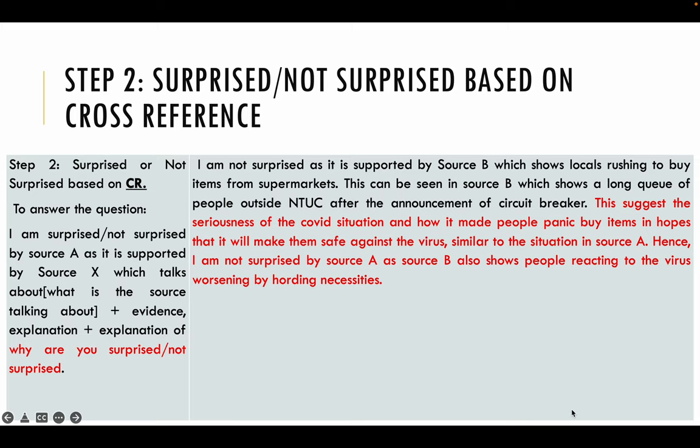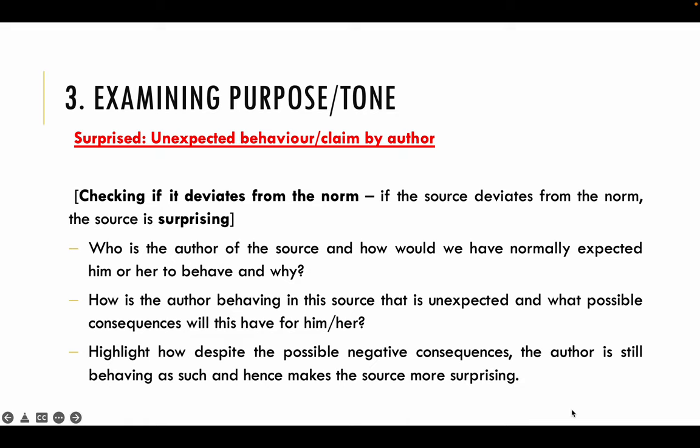Always think about the objective of why you're cross-referencing in the first place. The basic expectation is for you to be able to hit content and cross-referencing level. Now let's move on to the highest level where we're examining purpose or tone. I won't exactly state the answer for this activity, but I'm going to share some questions and thought processes for you to consider when examining surprise or not surprise in terms of purpose or tone for the highest level. At highest level, if you're surprised, this means there's certain unexpected behaviour or claims by the author — so this is where you'll need to check if it deviates from the norm.